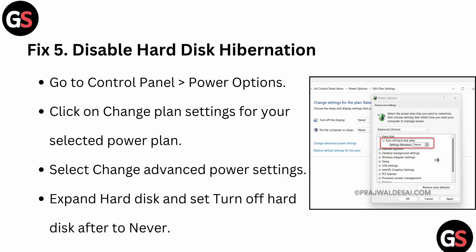The fifth fix is to disable hard disk hibernation. Go to Control Panel, then Power Options. Select 'Change plan settings,' then 'Change advanced power settings.' Expand 'Hard disk' and set 'Turn off hard disk after' to 0 (Never).